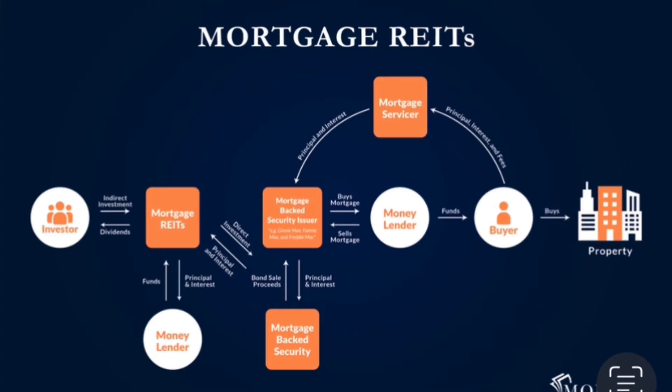Fannie Mae and Freddie Mac are the ones who buy the mortgage and send it to the money lender. The money lender then funds the buyer — the real estate owners — and we're able to buy property based off the loan we just received. After buying that property, there are principal and interest fees.